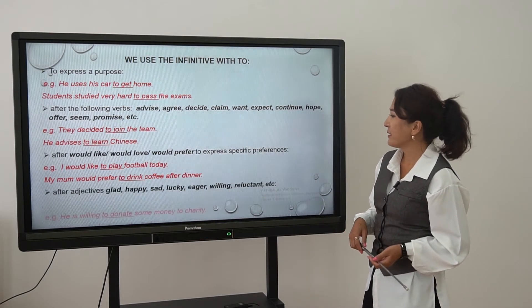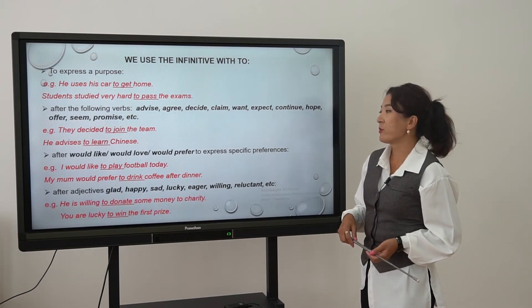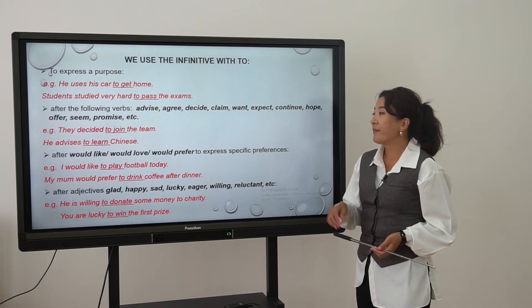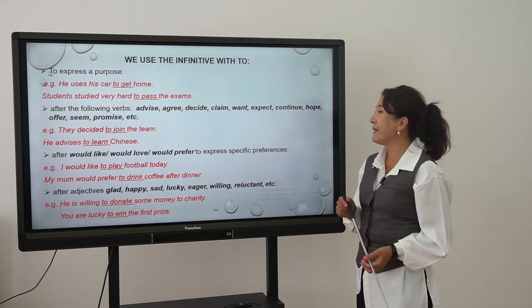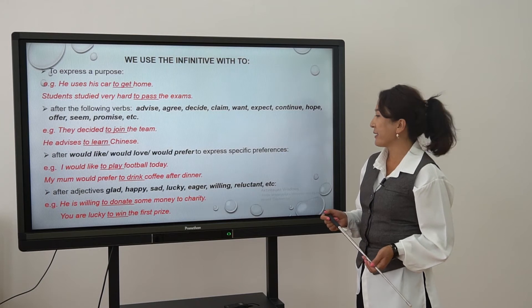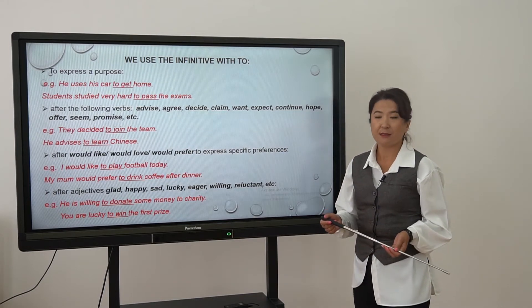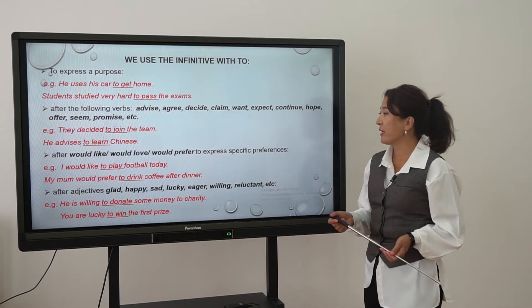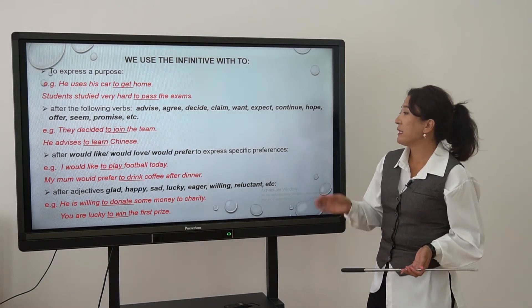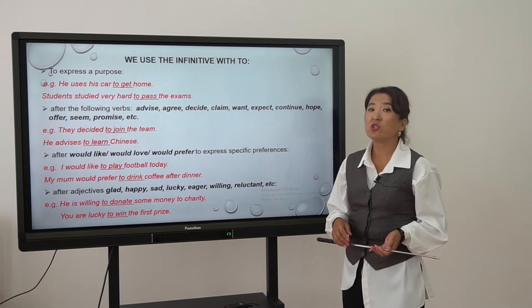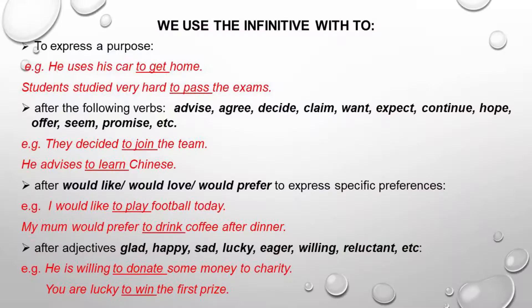Next: we use the infinitive with 'to' after adjectives such as glad, happy, sad, lucky, eager, willing, reluctant, etc. For example, 'He is willing to donate some money to charity.' 'We are lucky to win the first prize.' After adjectives, we always use the infinitive with 'to'.